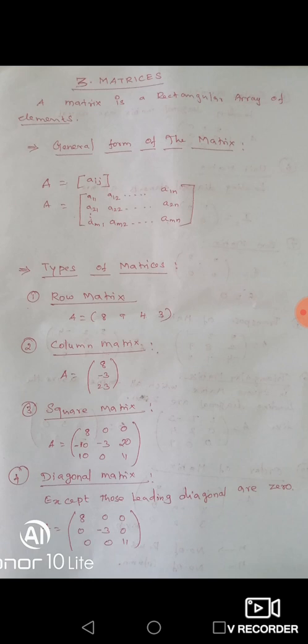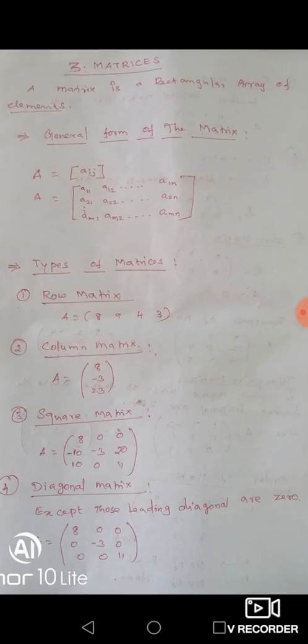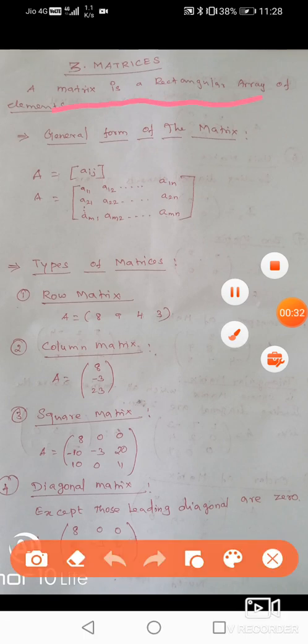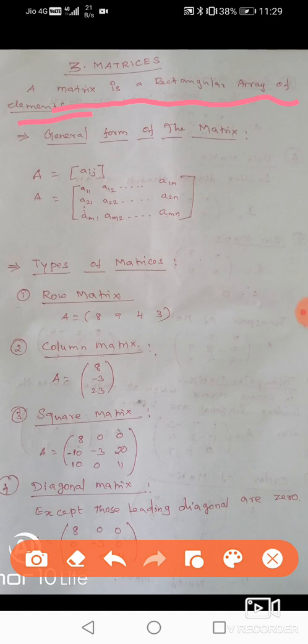We will go to the public exam. A matrix is a rectangular array of elements. All elements are arranged in rows and columns within square parentheses. That is the matrix.